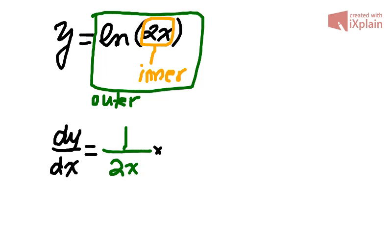And then we multiply this by the derivative of the inner function. So we have 2x. The derivative of 2x will be just 2.